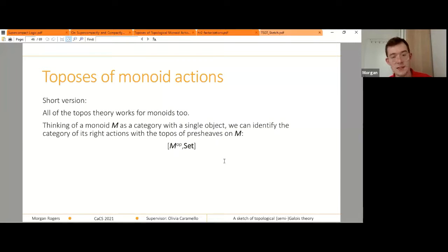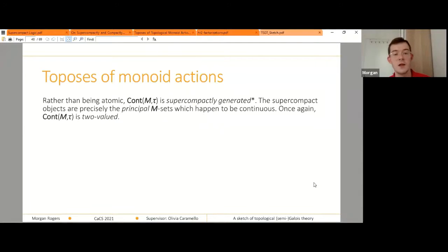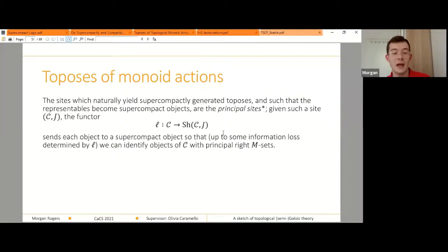So I can think of a monoid as a one object category. I get presheaves. The argument about the continuous actions for a given topology all works. So I get a Grothendieck topos. What changes is that I have to replace atomic by supercompact generated. But we still have a two value topos. So if I have a topos with these properties and a point, I can recover a topological monoid. And given a suitable site, I get a mapping from the objects of that site to the principal m-sets, which are the supercompact objects. And finally, these supercompact objects are indexed rather than by submonoids, by right congruences on my monoid. So we build up a nice parallel at the topos theory level.